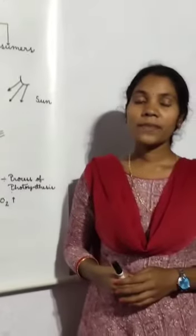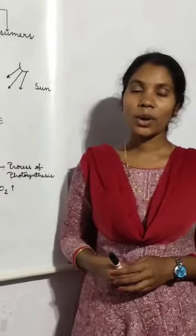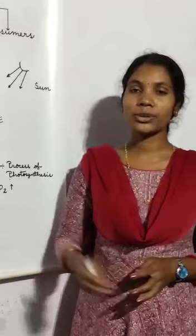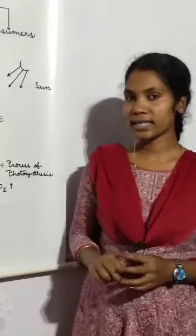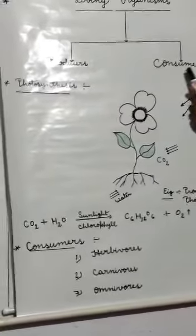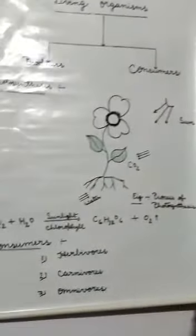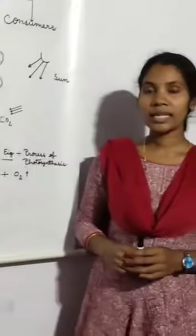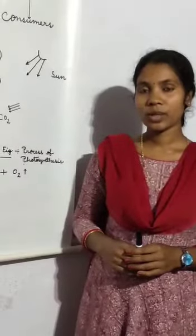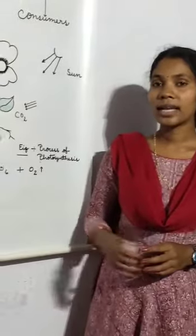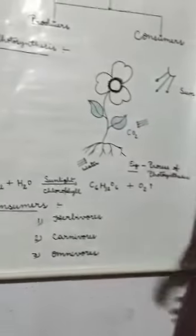On the basis of their feeding habit, living organisms are classified into two broad categories. First one is producers and the second one consumers. Producers can manufacture their own food. All green plants are included under this category.